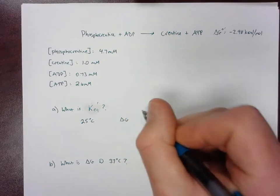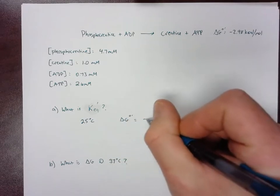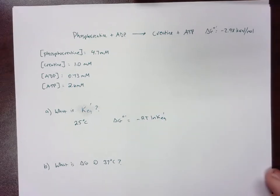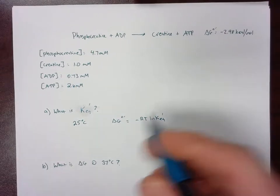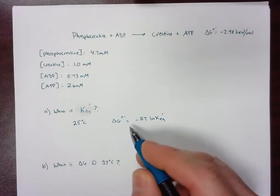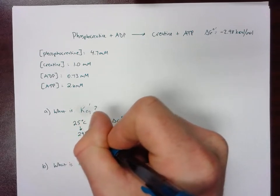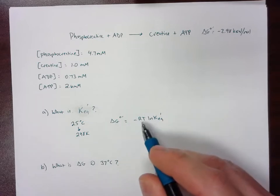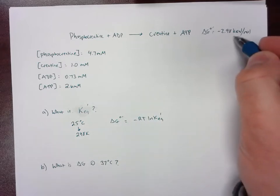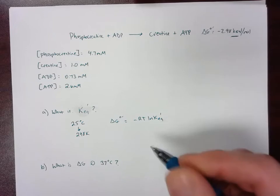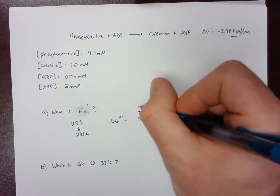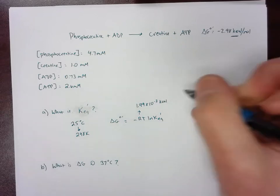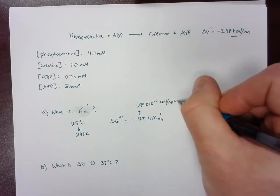We're going to use the formula delta G equals negative RT ln of KEQ. So this T is going to be in terms of Kelvin, so we're actually going to use 298 Kelvin here. And then we already have our delta G. We know that our R, in this case, we have the delta G in terms of kilocalories per mole, so our R is actually going to be 1.99 times 10 to the negative third kilocalories per mole Kelvin.